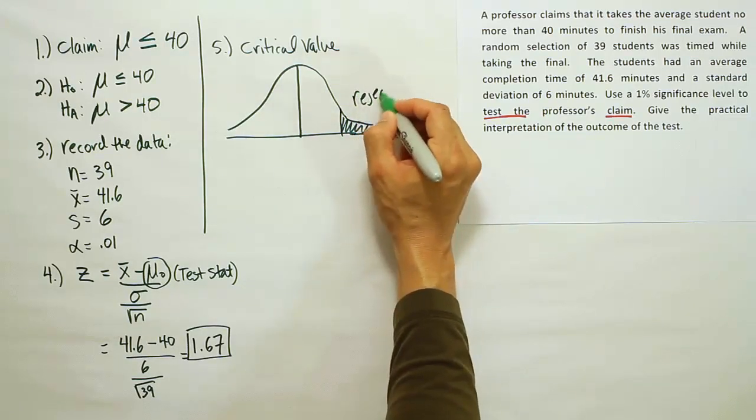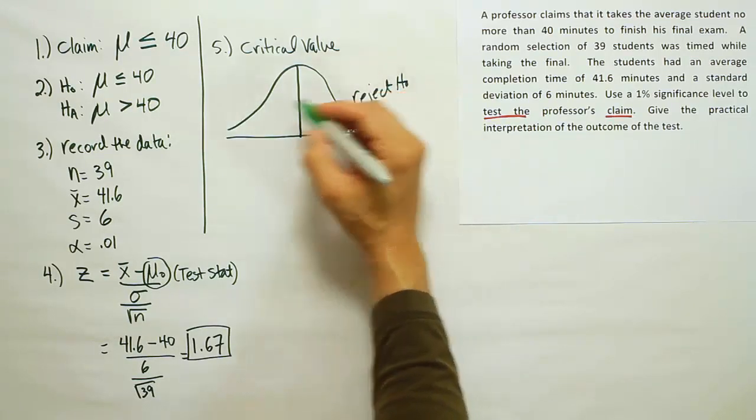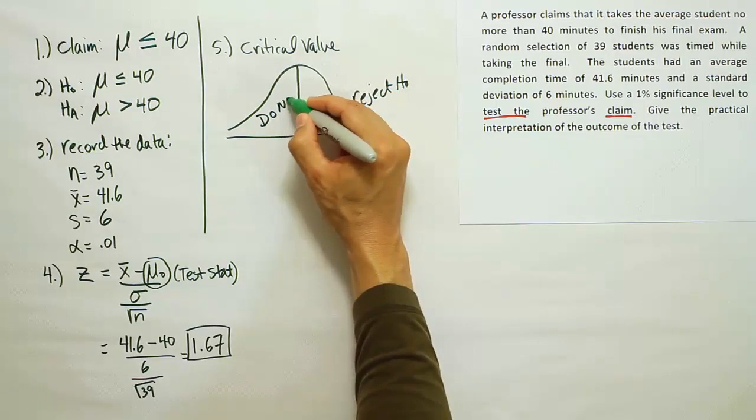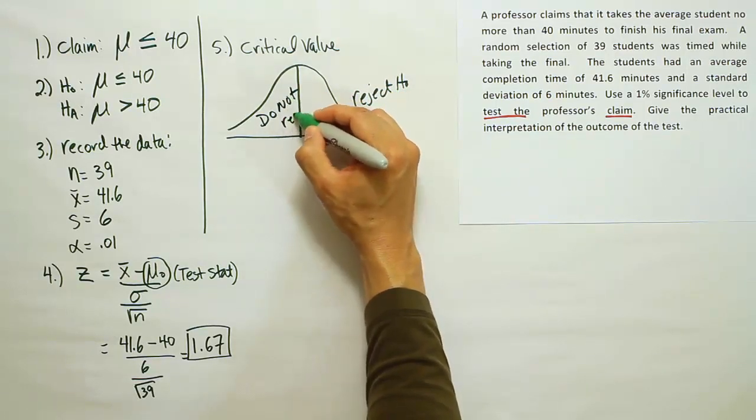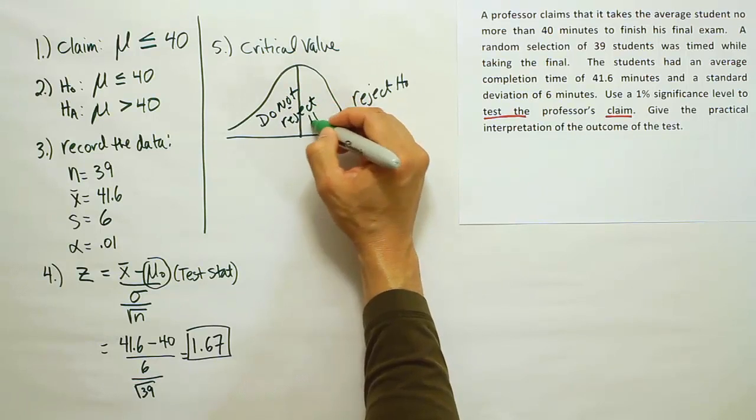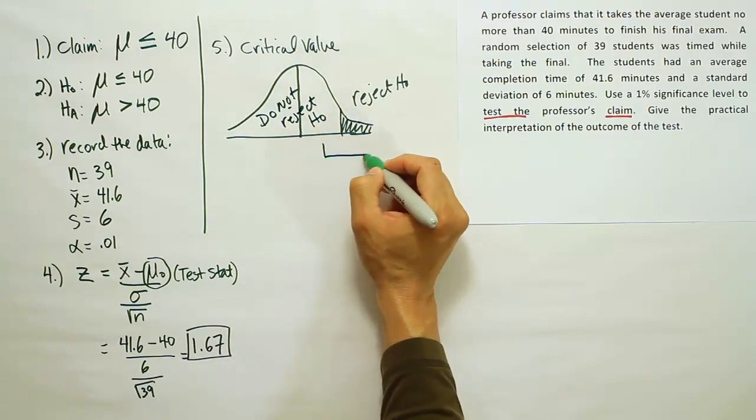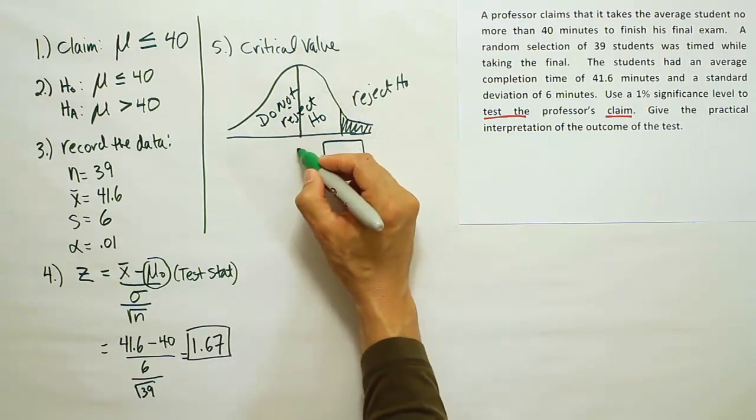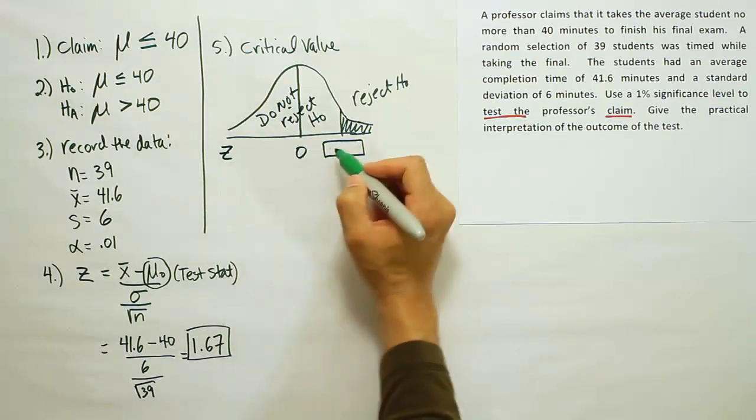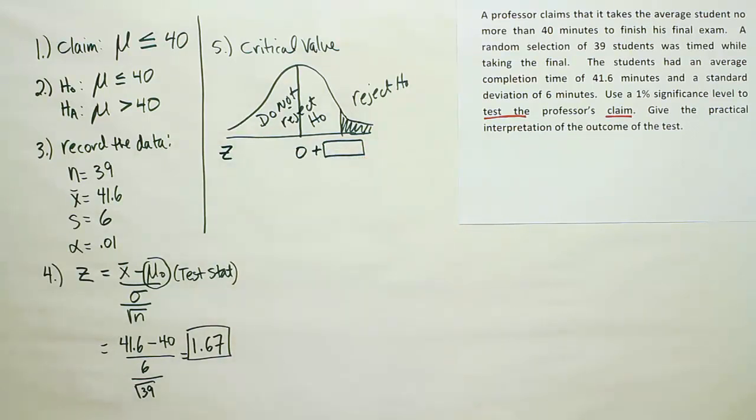So if the test stat lands over here, we're going to reject H0. If it lands in here, we're not going to reject H0. So we're looking for that z-score that would go there. It should be positive since it's on the right-hand side. So when we get the number from the table, we'll just put it there.